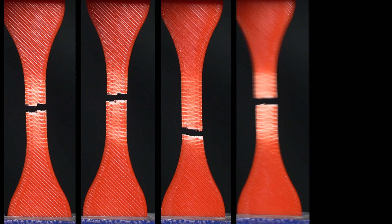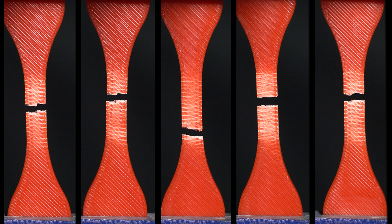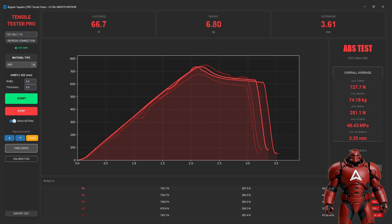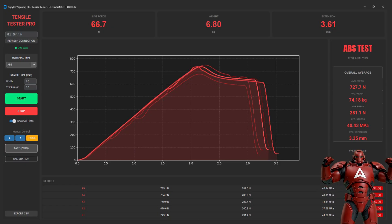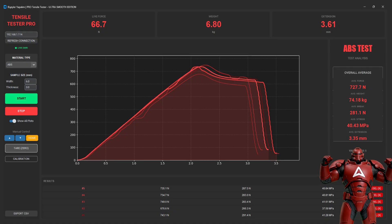First up is red ABS. Five samples face the tensile test. On average, ABS reaches a peak stress of about 40 megapascals, carries around 582 newtons under load, and breaks after roughly 3.4 millimeters of stretch.